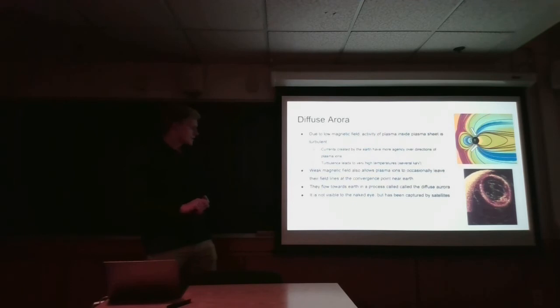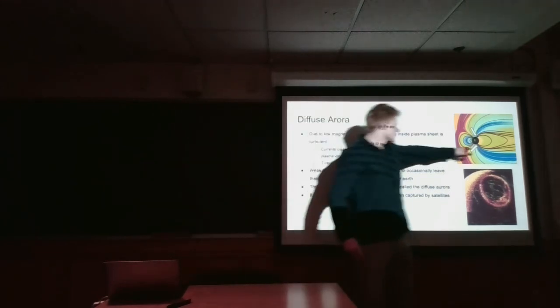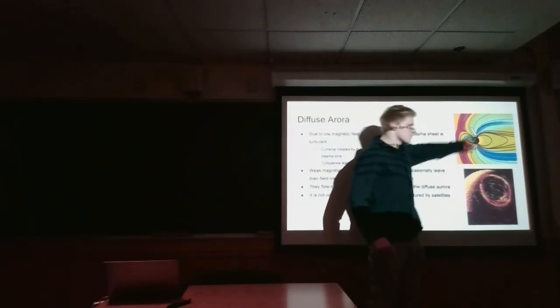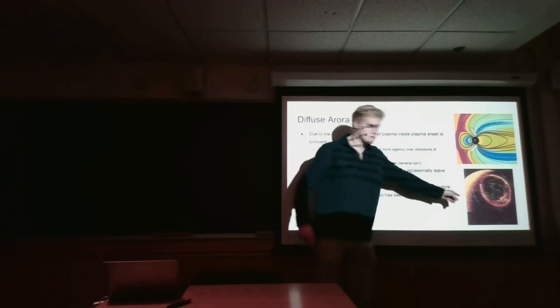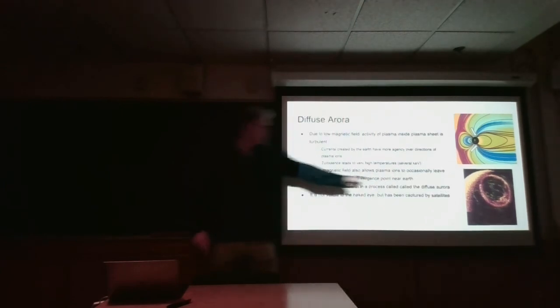And the weak magnetic fields also allow plasma ions to occasionally leave their field lines, since the field lines aren't very particularly strong. And they leave the field lines generally here and here, in a ring around here, which can be seen through this satellite picture here.